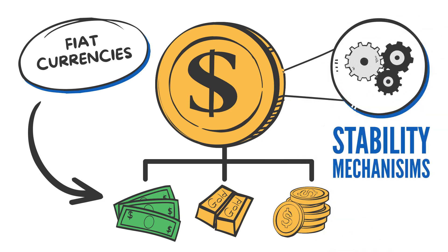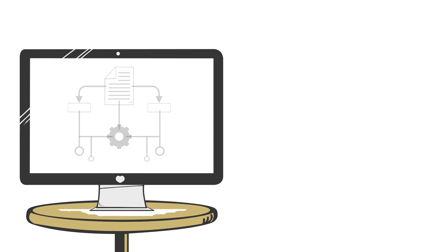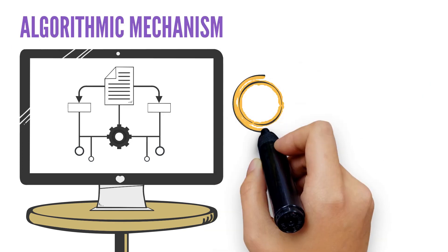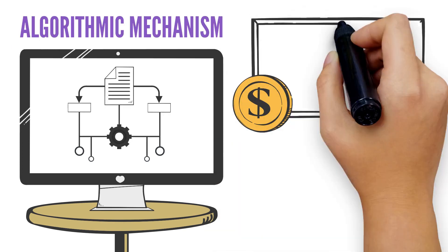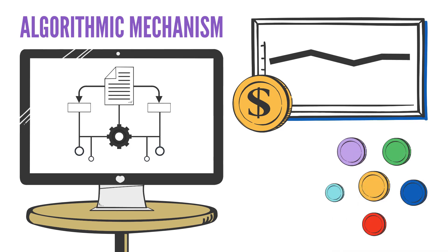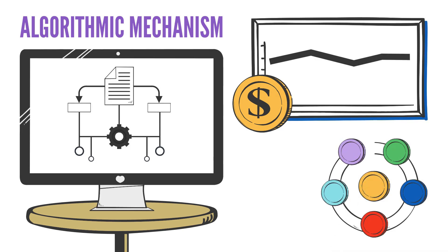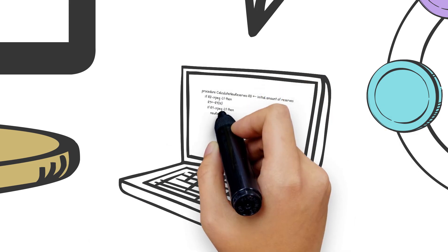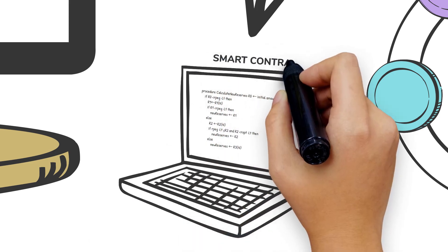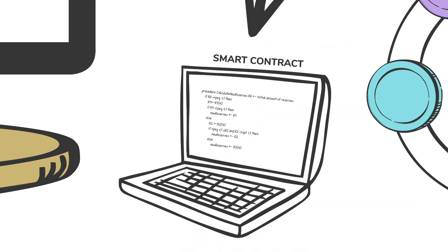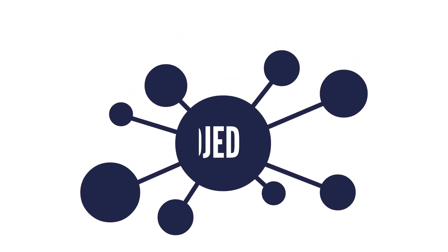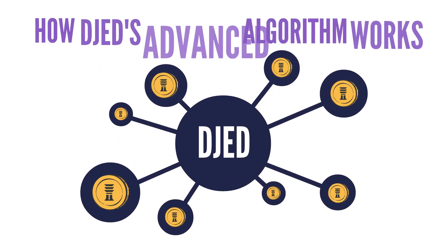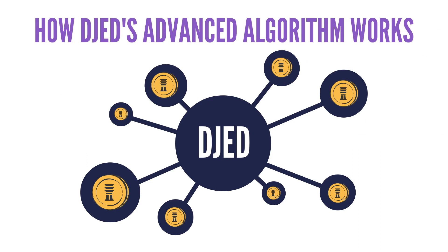There are a few stability mechanisms to peg tokens in order to make them stable. One of those solutions is performed by an algorithmic mechanism. An algorithmic stablecoin maintains stability through a combination of collateral and a reserve token. The rules by which the algorithm performs its actions are defined by smart contracts.